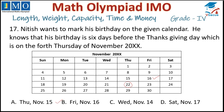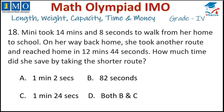Let us move to the next question. Question 18: Mini took 14 minutes and 8 seconds to walk from her home to school. On her way back she took another route and reached home in 12 minutes 44 seconds. How much time did she save by taking the shorter route? We have to subtract: 14 minutes 08 seconds minus 12 minutes 44 seconds.